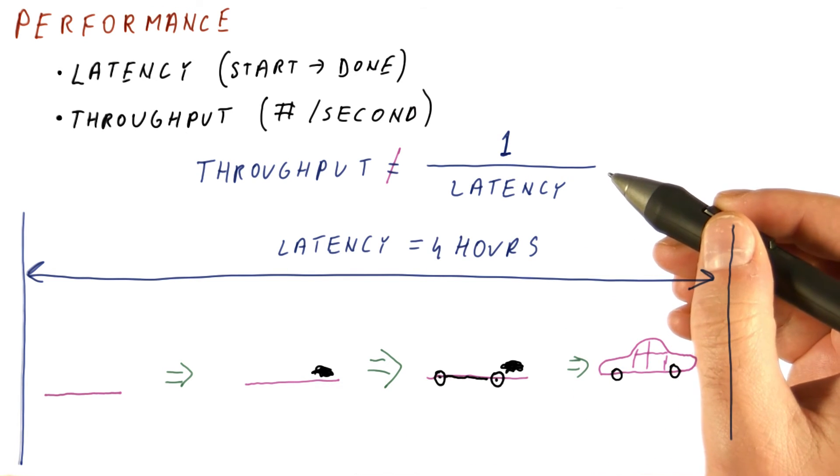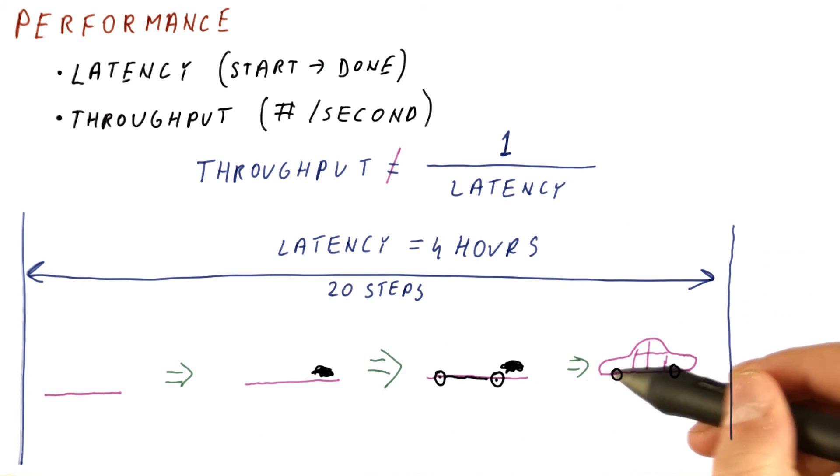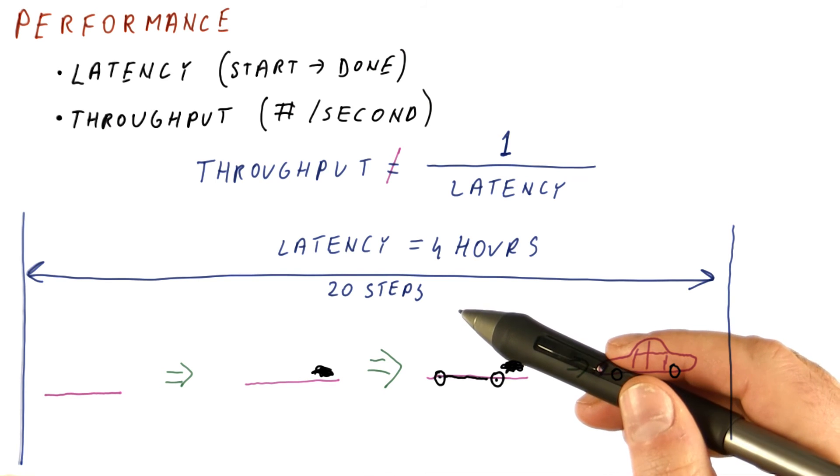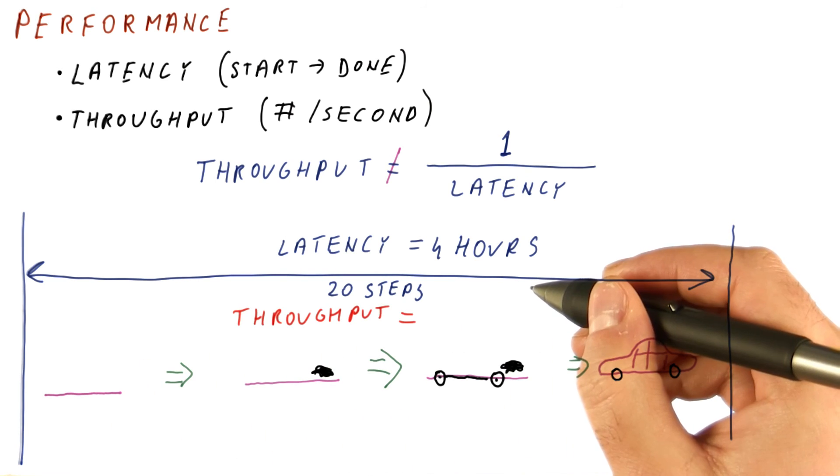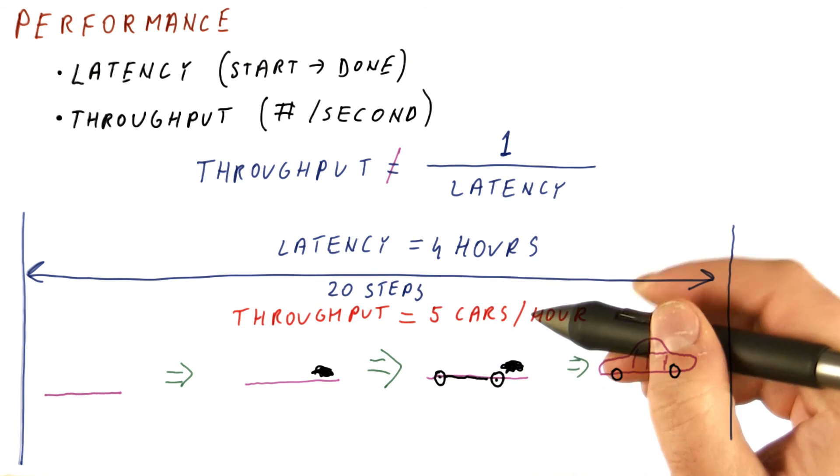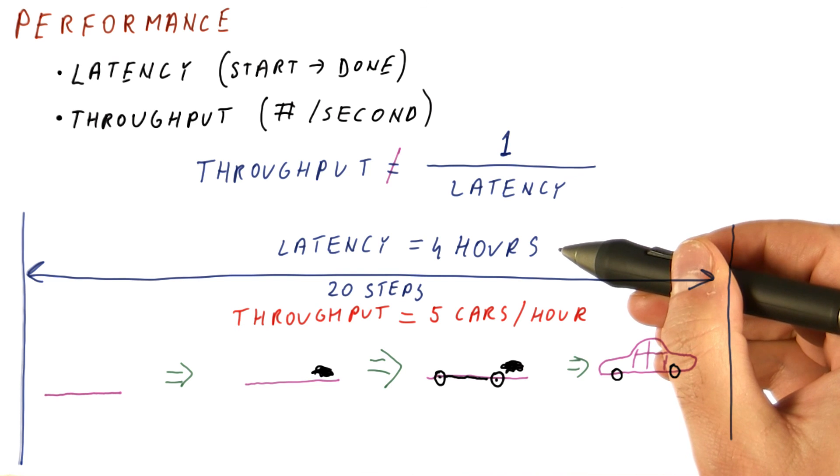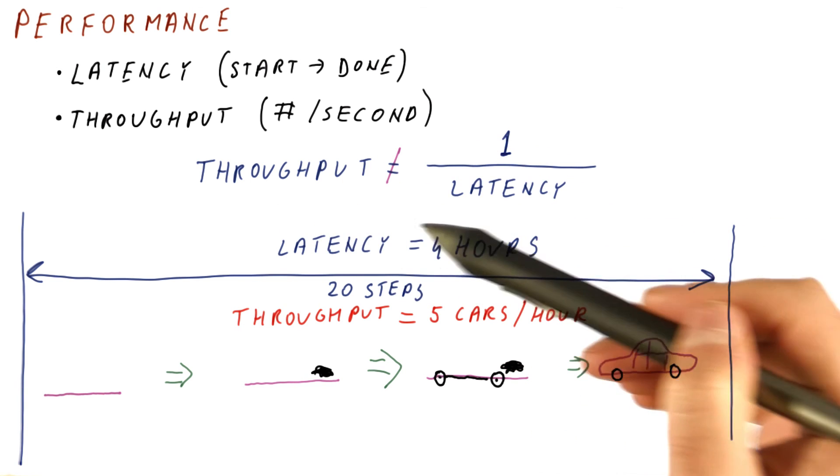So let's say that the latency is four hours, but it takes something like 20 steps for a car. If each of these steps takes the same amount of time and the cars are just moving through these steps, then our throughput is actually five cars per hour, not 0.25 cars per hour. So as you can see, the throughput and the latency need not be like this.